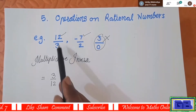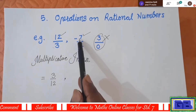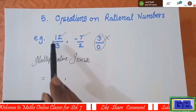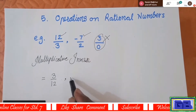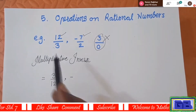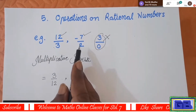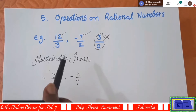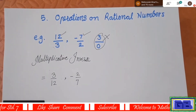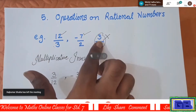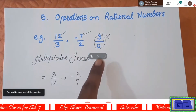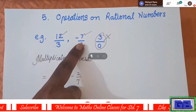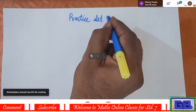So 3 upon 12 is the multiplicative inverse of 12 upon 3. Similarly for negative 7 upon 2 — we are not bothered about whether it is positive or negative; if it is positive it remains positive, if negative it remains negative. Don't change the sign. The 2 below goes up and the 7 above goes down, giving the multiplicative inverse. Write down these examples and write down practice set 22, question number one.